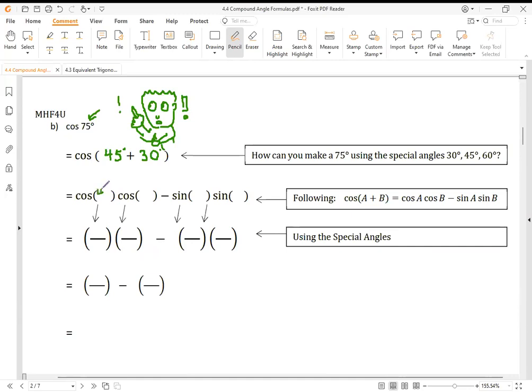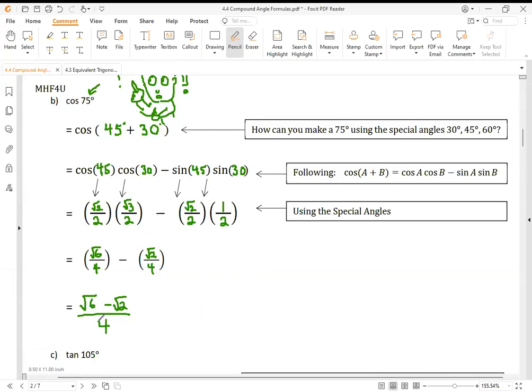So cosine of 75 is cos, cos, sine, sine, and from there we can use special triangles. Cos 45 degrees, that would be root 2 over 2. Some people do 1 over root 2 - both will get the same answer. Cos 30 is root 3 over 2. Sine 45, root 2 over 2. And sine 30, 1 over 2. So simplifying, that is root 6 over 4. This is root 2 over 4. And simplified, we only have this.